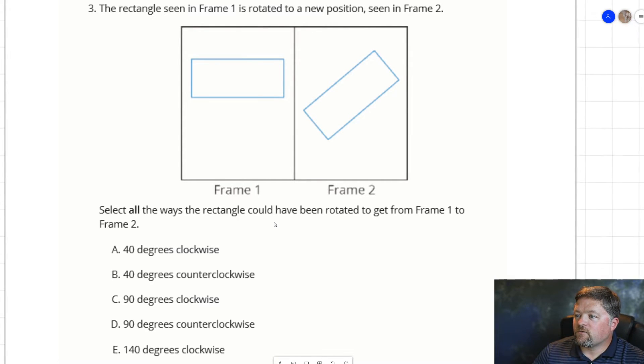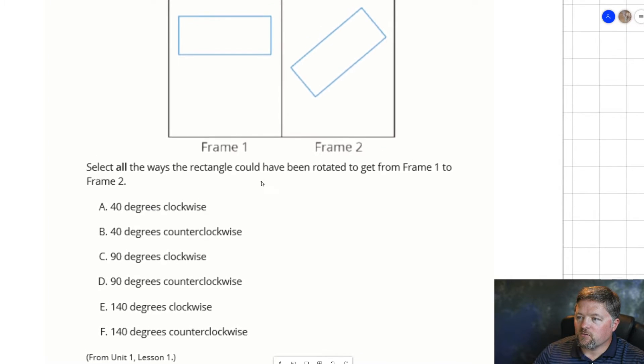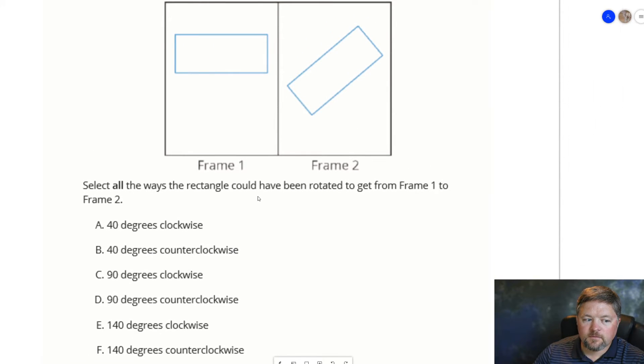The rectangle seen in frame 1 is rotated to a new position seen in frame 2. Select all the ways the rectangle could have been rotated to get from frame 1 to frame 2. Well, if I look at that rotation, what are my choices? 40 degrees, 90 degrees, 140 degrees.